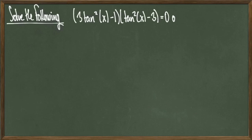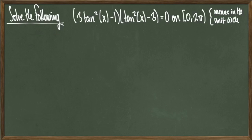In this first example, we'll solve the equation 3 times tan squared of x minus 1 times tan squared of x minus 3 is equal to 0 over the interval 0 to 2 pi, meaning our solutions x should come from positive angles in the unit circle. The key observation is that we have a product of two different things equal to 0, so if we find values of x that make either factor equal to 0, we can add those to our solution set.